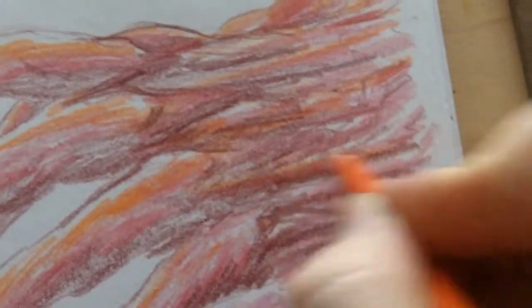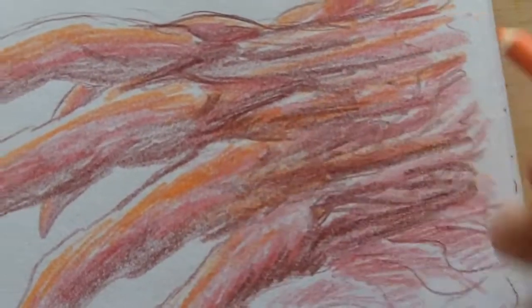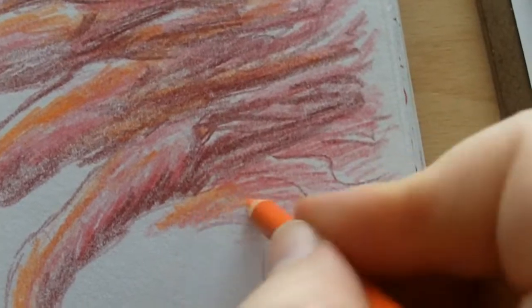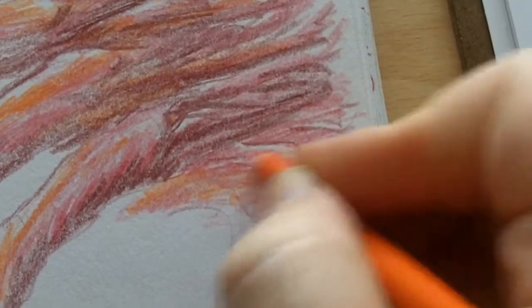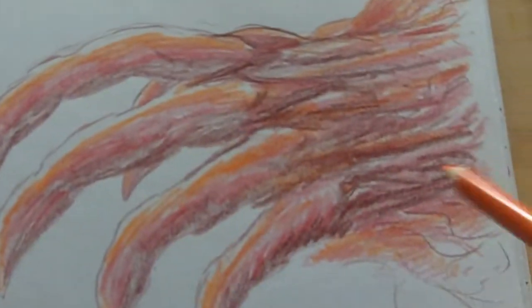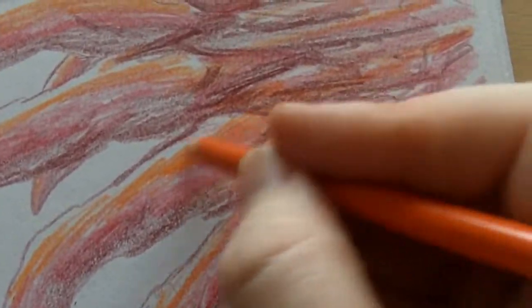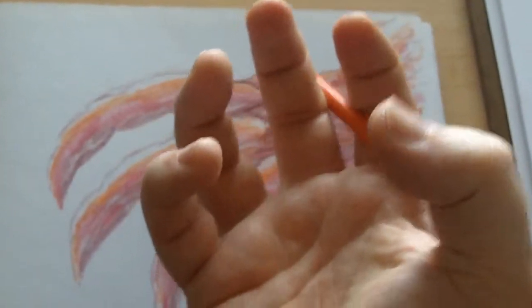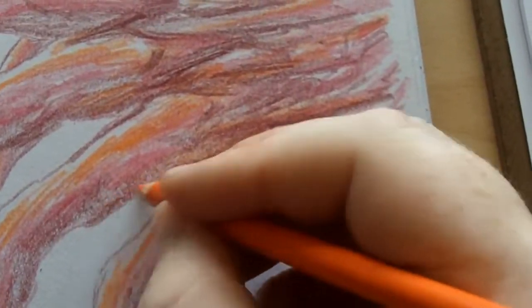So at some point I'd probably decide to redraw this and maybe do some more detail. Maybe draw the hand in a different position, different claw-like structure. Maybe the hand open like that or something like that.